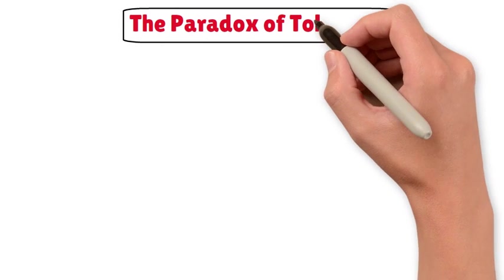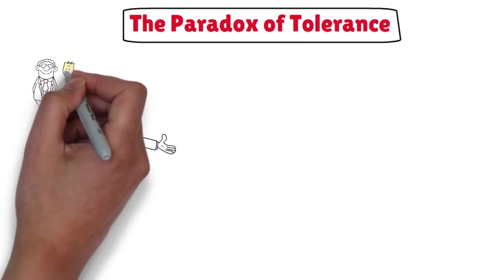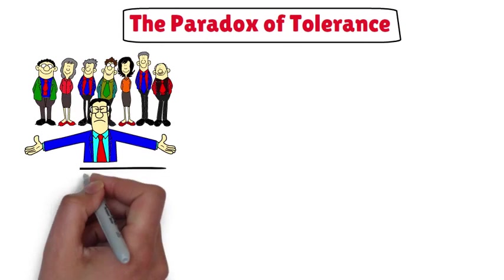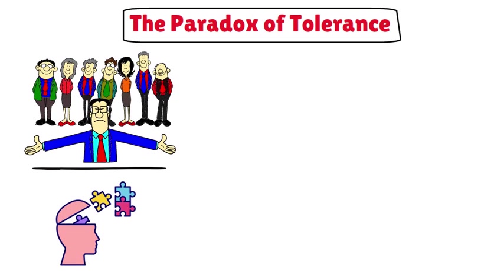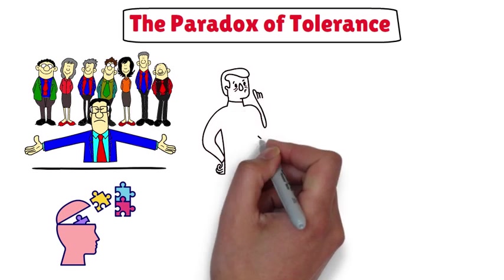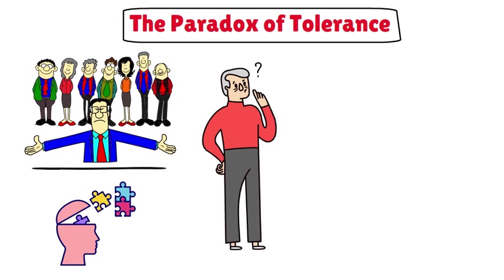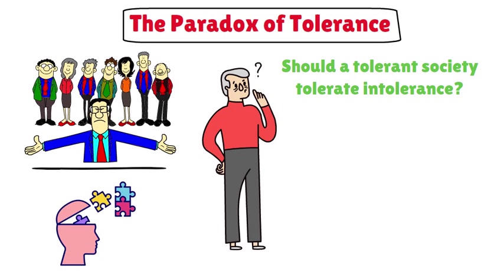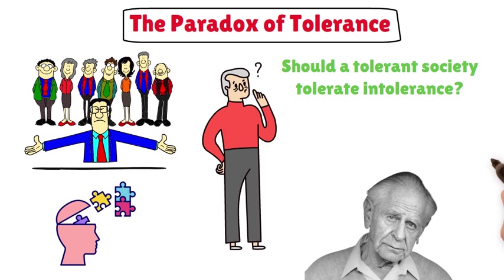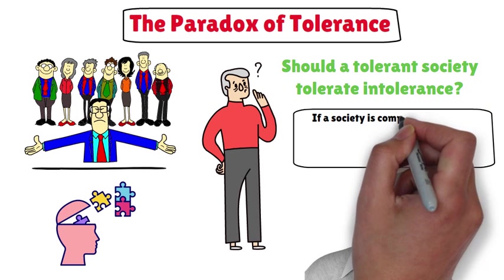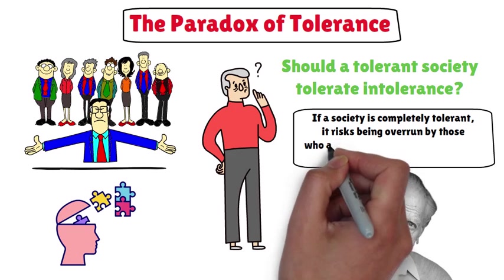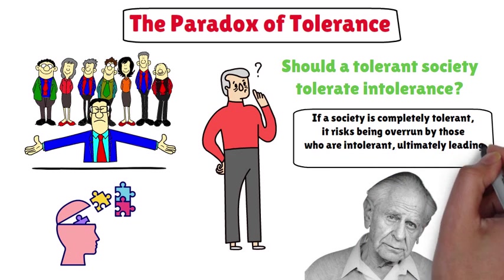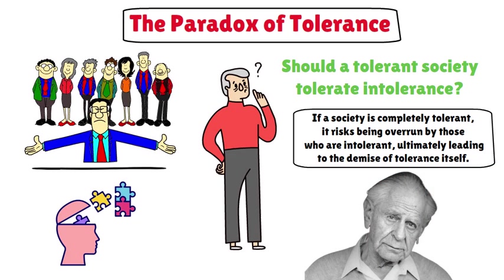The Paradox of Tolerance confronts the tension between maintaining a tolerant society and the presence of intolerant ideologies within it. It poses a crucial question: Should a tolerant society tolerate intolerance? This paradox, famously articulated by philosopher Karl Popper, warns that if a society is completely tolerant, it risks being overrun by those who are intolerant, ultimately leading to the demise of tolerance itself.